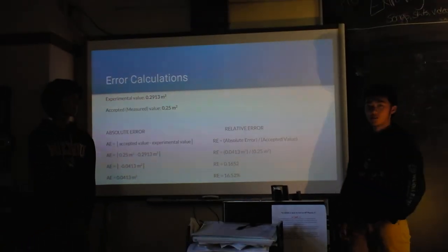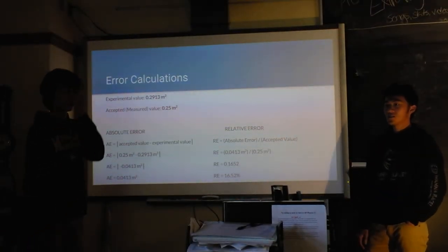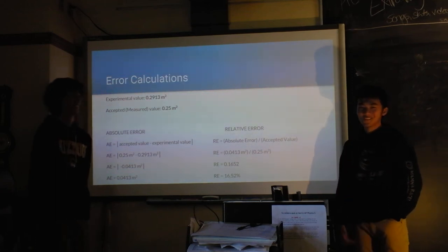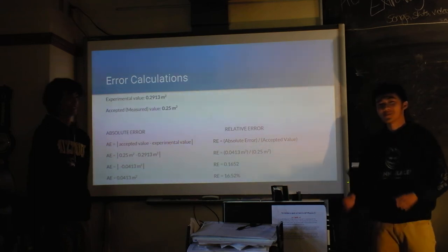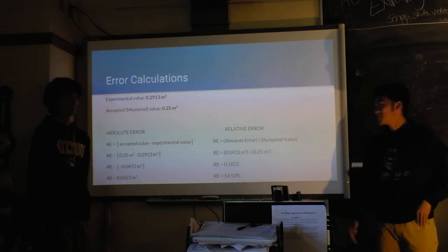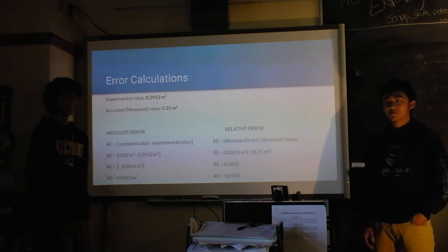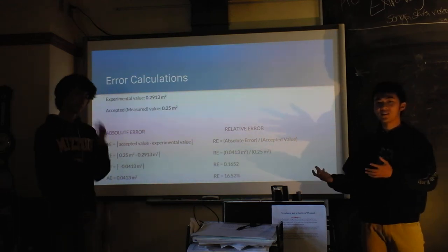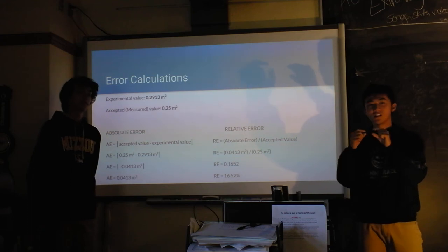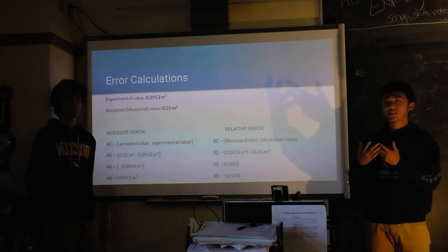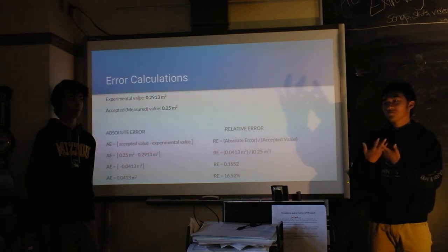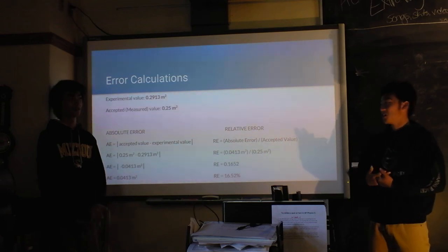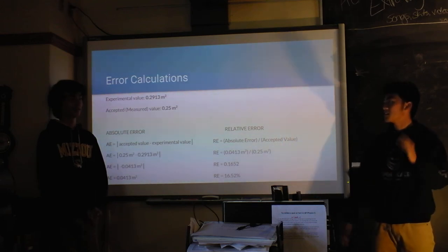Another source of error might be the measurement units — it was in inches, but we calculated how many inches we needed to get the centimeter value. Also, regarding the light bulb's lumen rating: the factory marked 900 lumens on the bulb, but we're not sure exactly how they measured it. We got a similar number though — around 880-something, which is close.